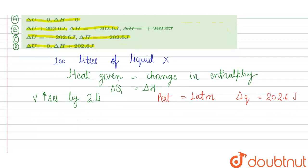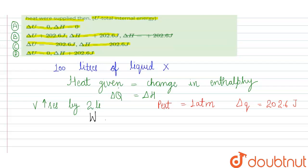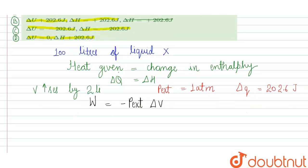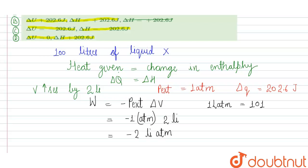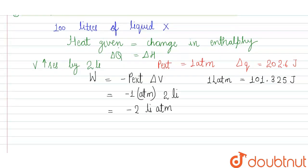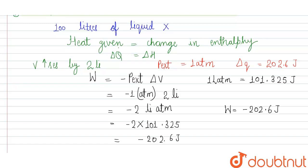We know that work W = -P_external × ΔV. So our value is W = -180 atm × 2 liters = -2 liter·atm. Since 1 liter·atm = 101.325 joules, multiplying gives us W = -202.6 joules.